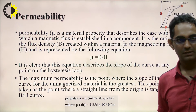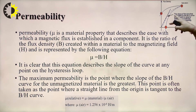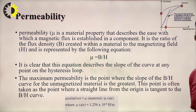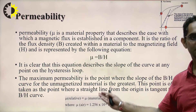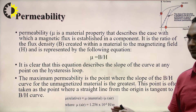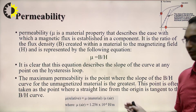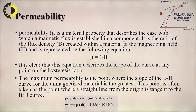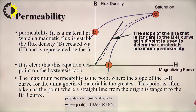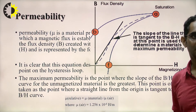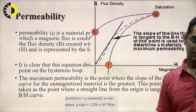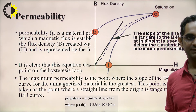This point is often taken as the point where a straight line from the origin is tangent to the B/H curve. Relative permeability (mu relative) equals the permeability of the material divided by the permeability of air, where the permeability of air is 1.256 × 10⁻⁶ per meter.